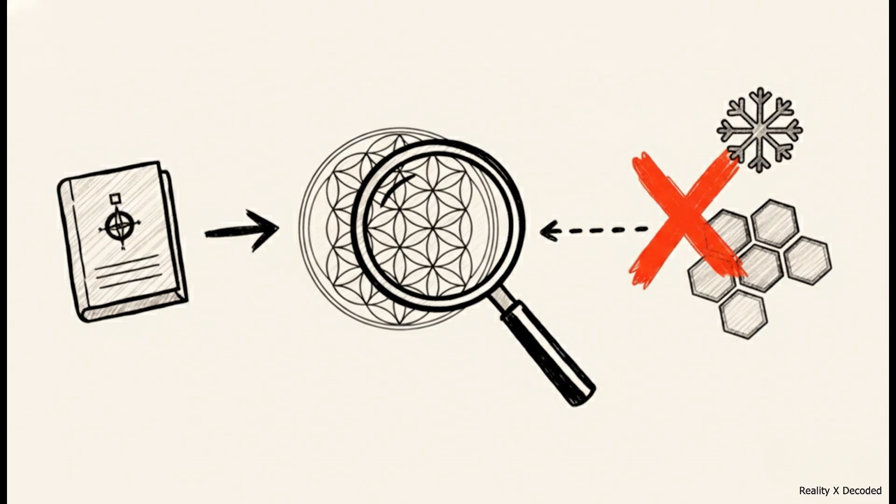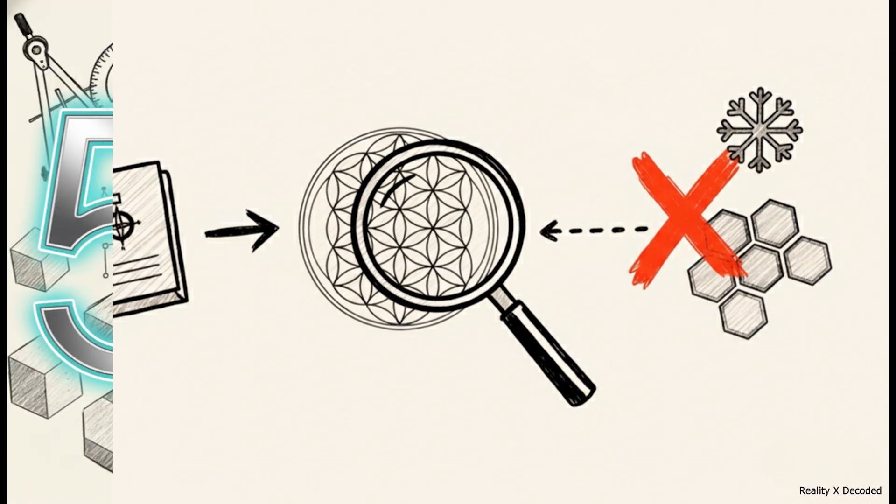And this right here, this is the key distinction. The flower of life is a powerful description of how order can emerge from simple rules. It's a mirror reflecting the rules of reality, but it is not the source of those rules.